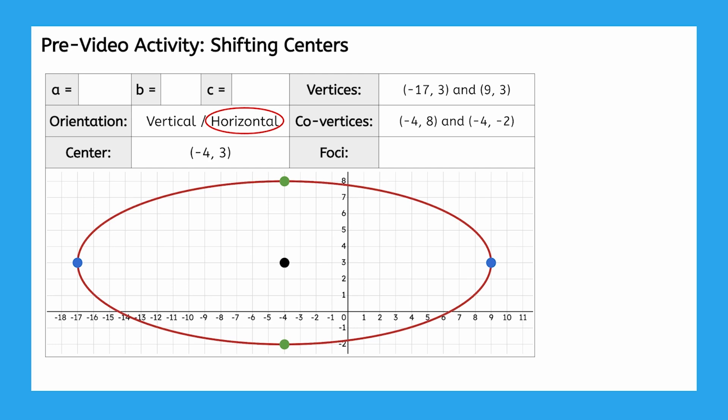Plotting the center helps us see we have a major radius of 13 and a minor radius of 5. To find the foci, we use this equation to find that c equals 12, which means our foci are 12 units from the center, landing them at negative 16, 3 and 8, 3.